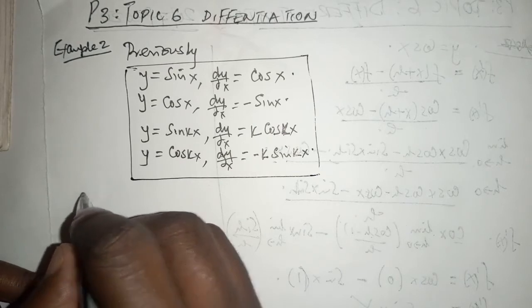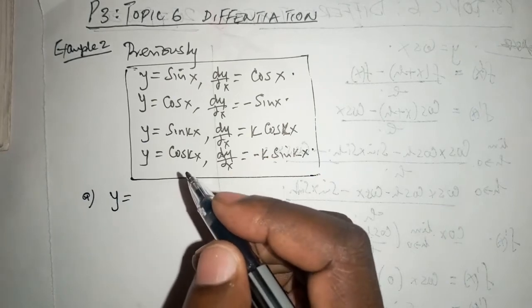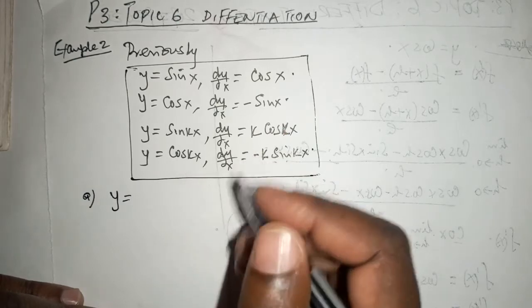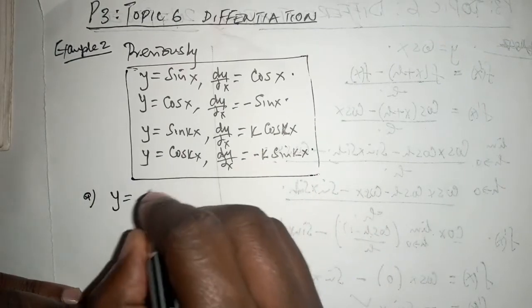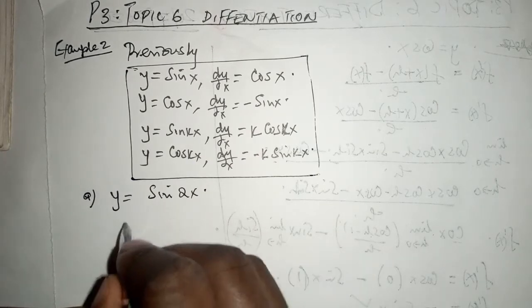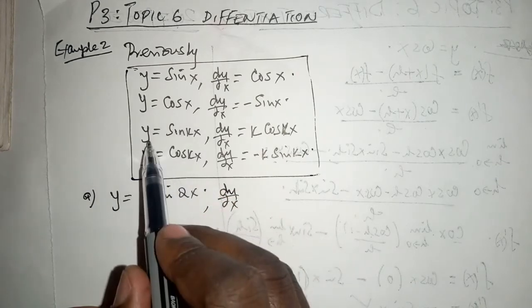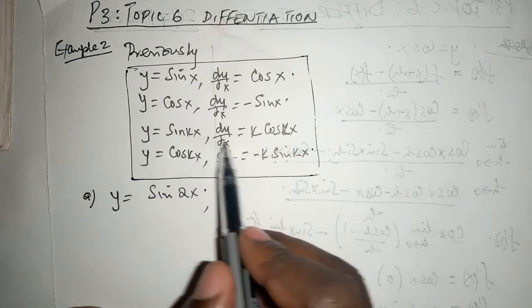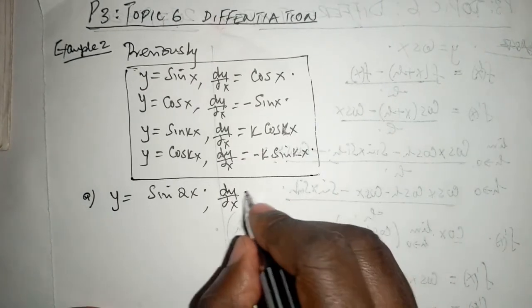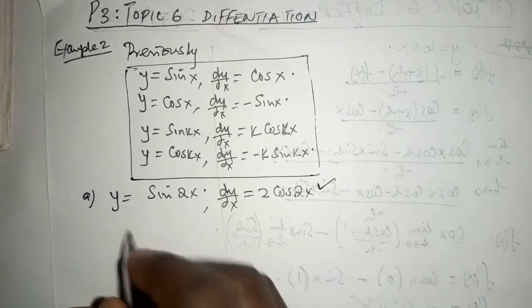In example 2, part A, we are supposed to find the differential, find dy/dx given that y equals sine 2x. So in this case, it is already in this format. The dy/dx or rather the differential is going to be 2 cosine 2x, and that is just like it.